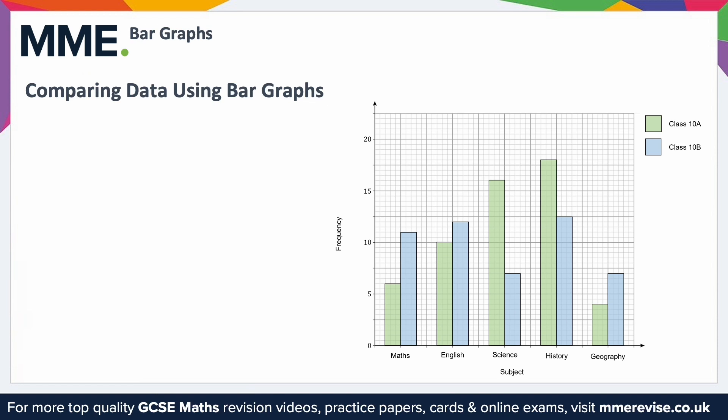The following bar chart shows the favourite school subjects of pupils in class 10A and class 10B, as you can see from the key. From that, we can draw some conclusions. For example, if we look at this section of the bar chart, the blue bar, which represents class 10B, is significantly larger. So you could say that maths is more popular in class 10B.